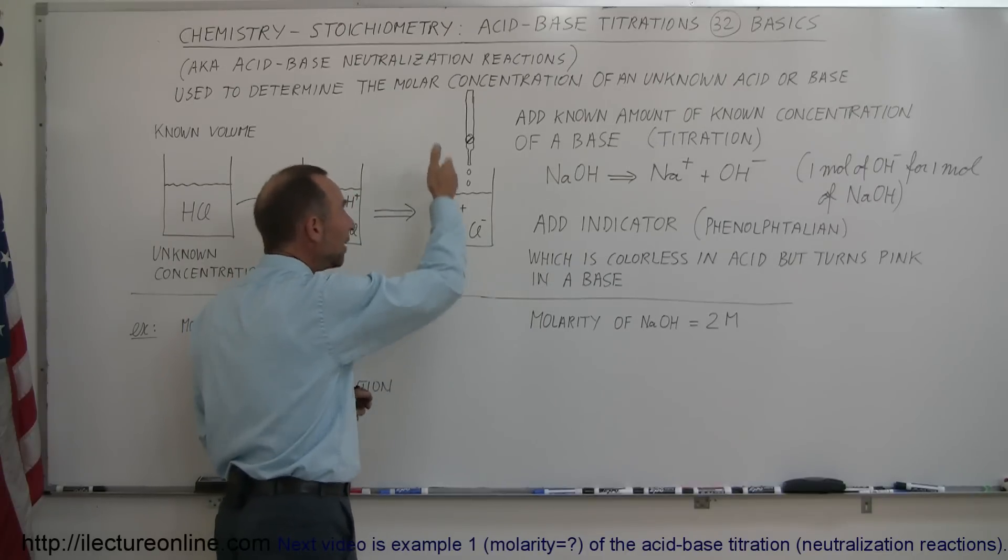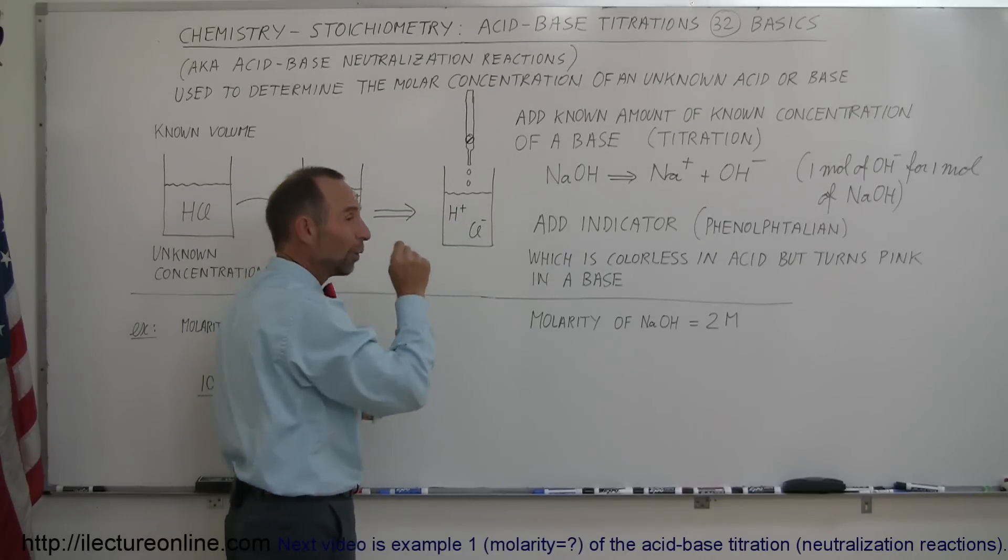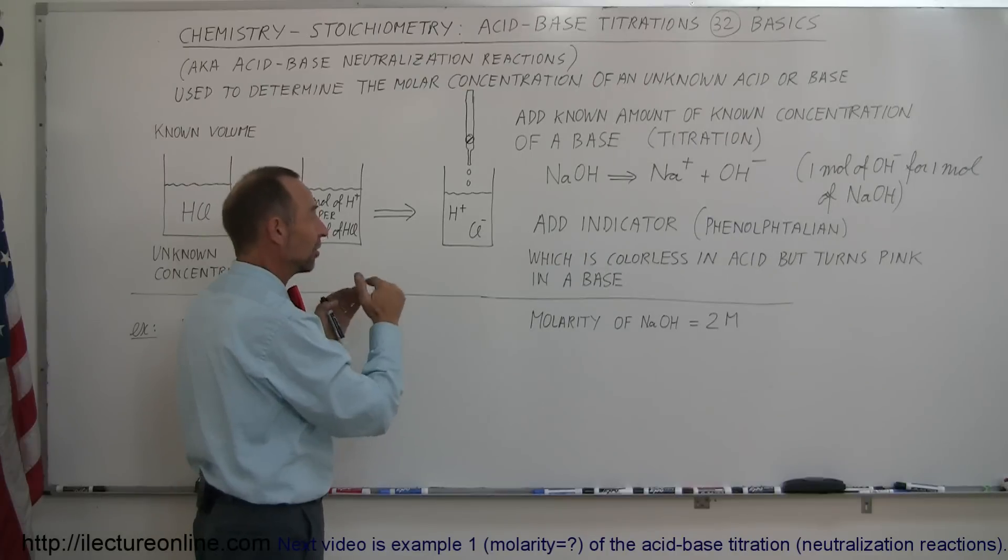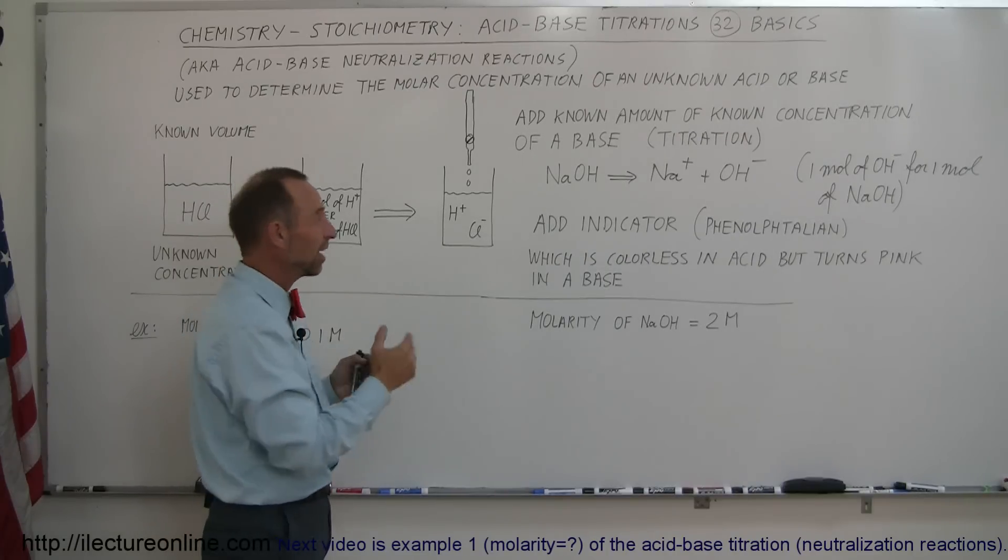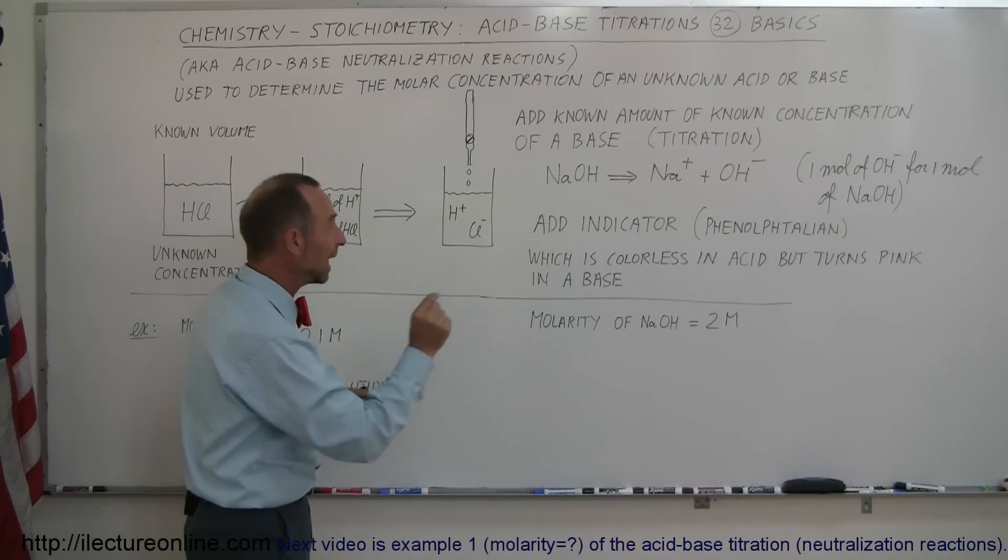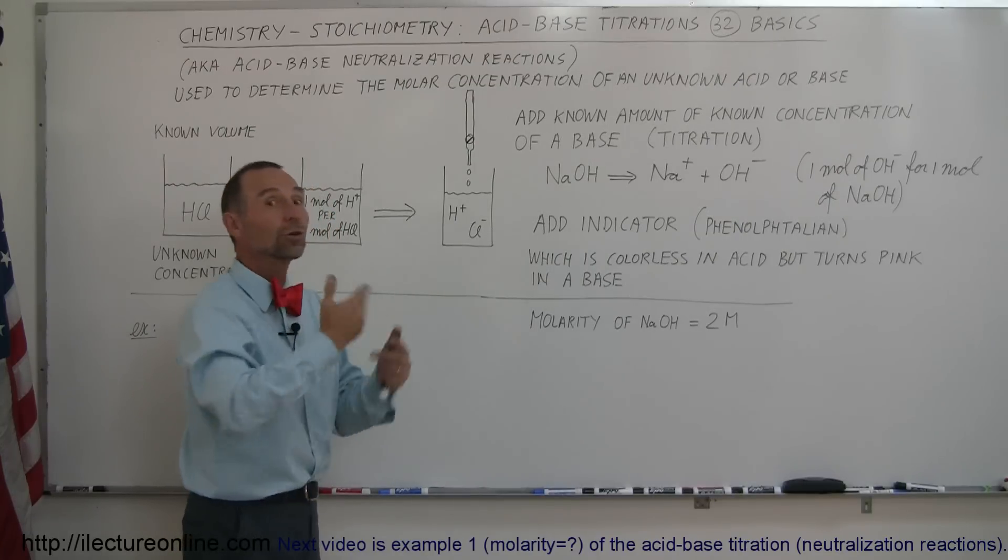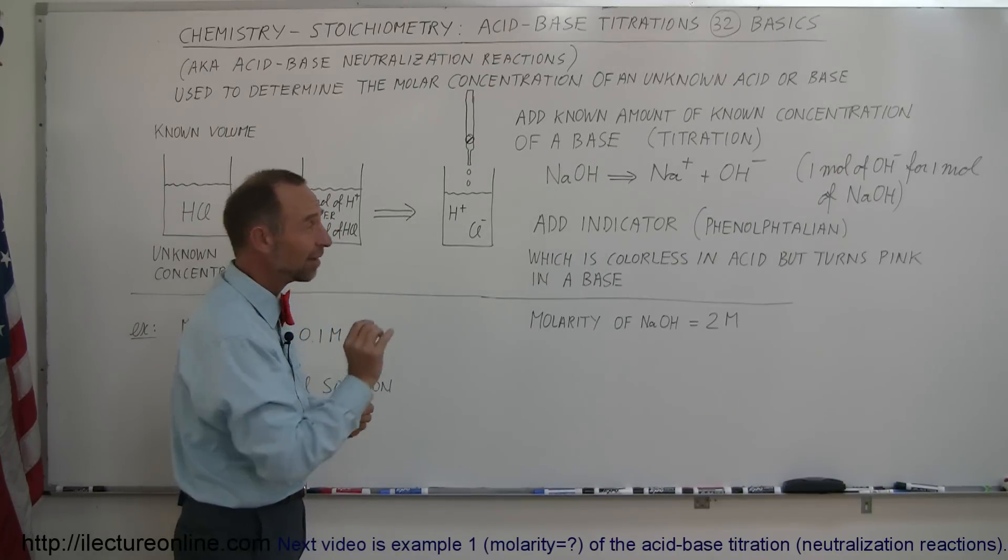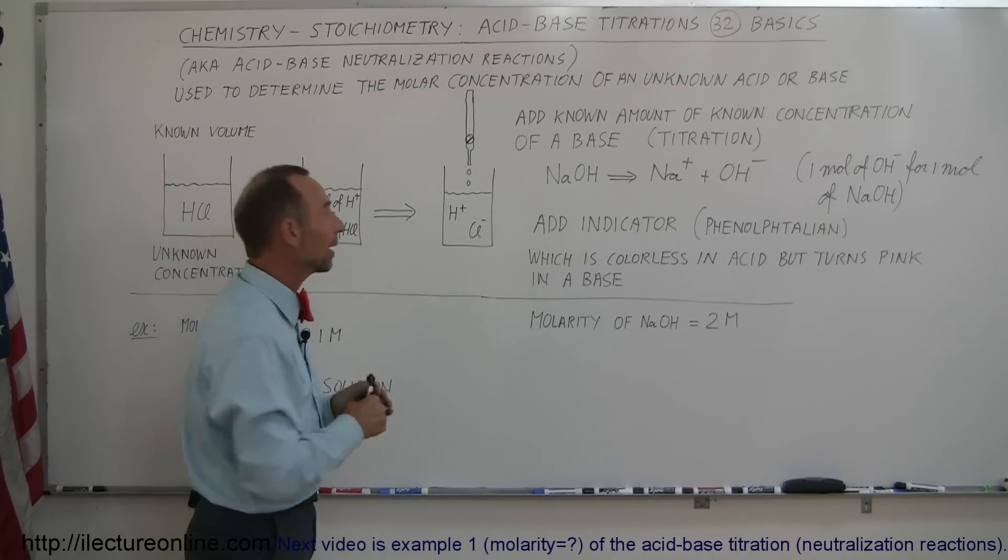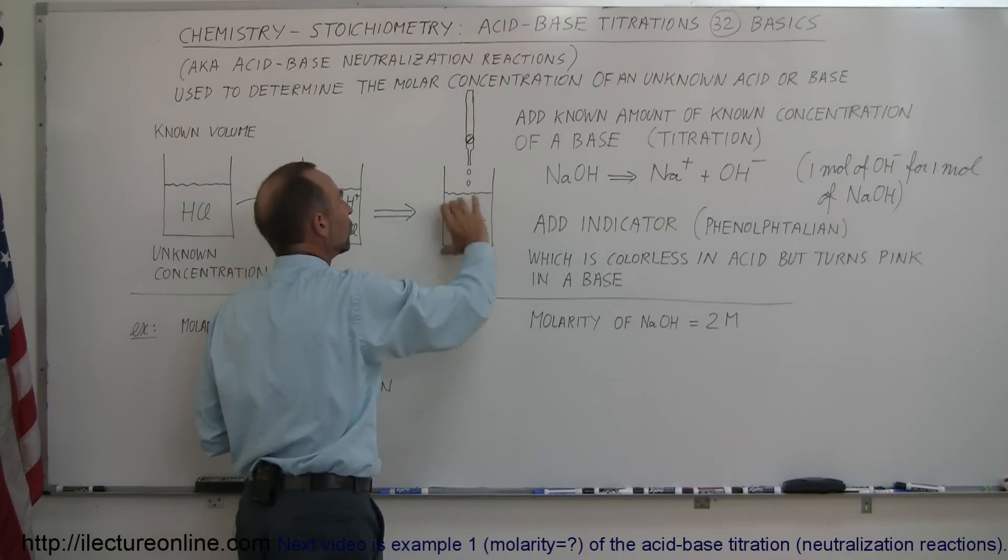The way we do that is we add a little bit of indicator, not too much, but enough. Then we start adding base to it, one drop at a time. Finally, when the last drop makes it completely neutral, when there's the same amount of hydrogen ions as hydroxide ions, adding one more drop will turn the whole solution pink. Then we stop and figure out how much exactly we added.